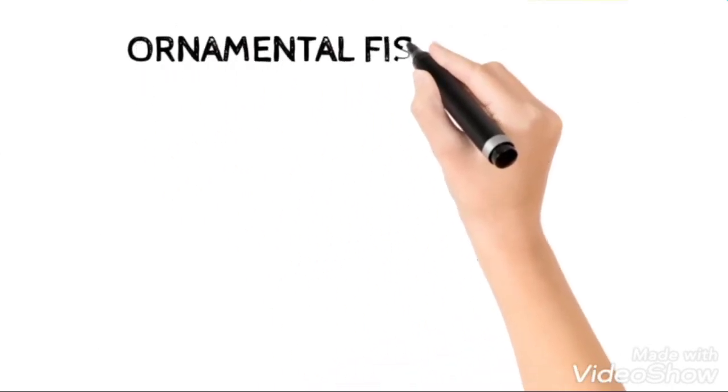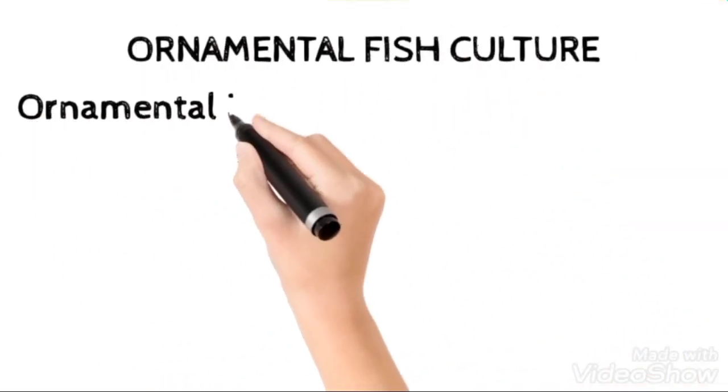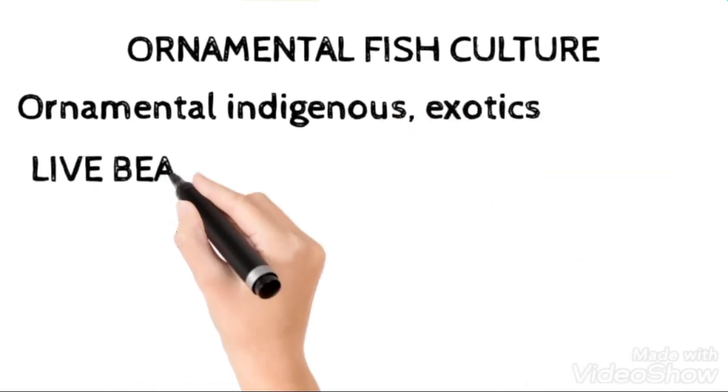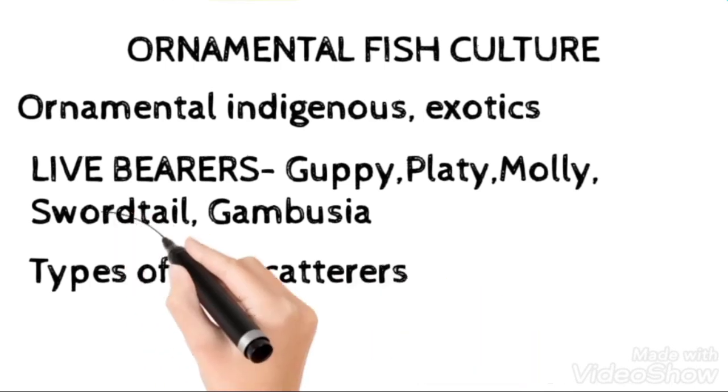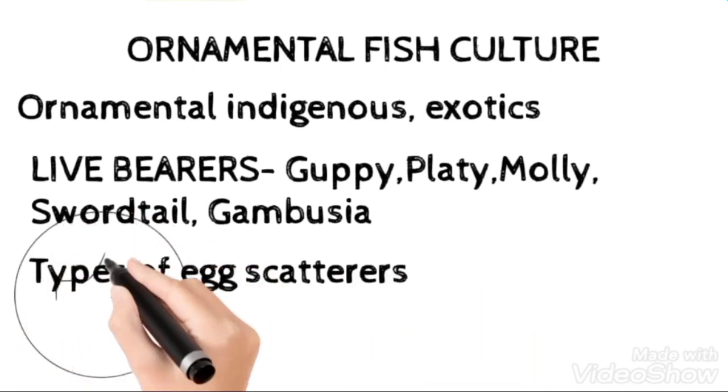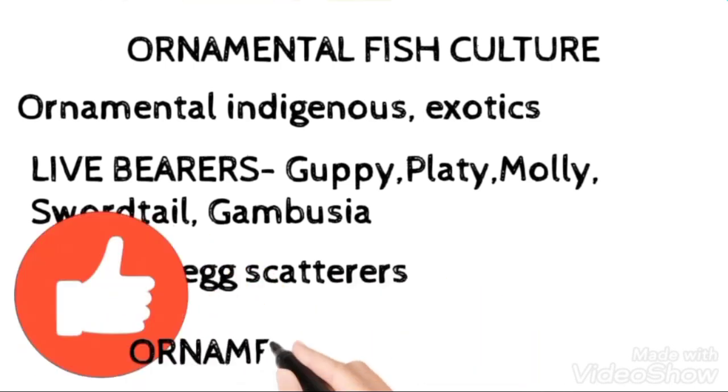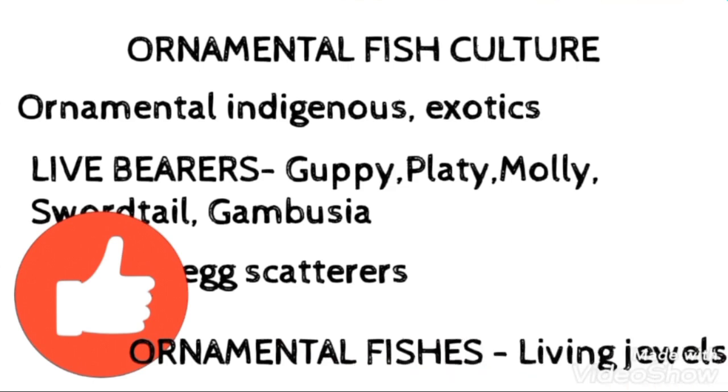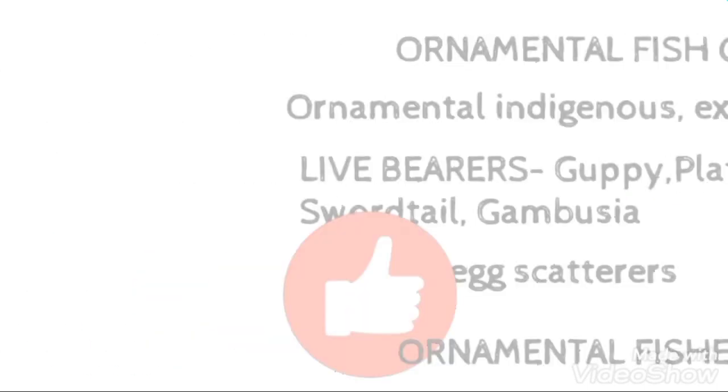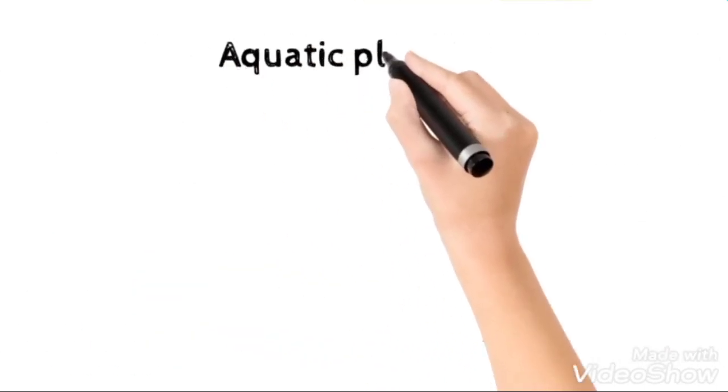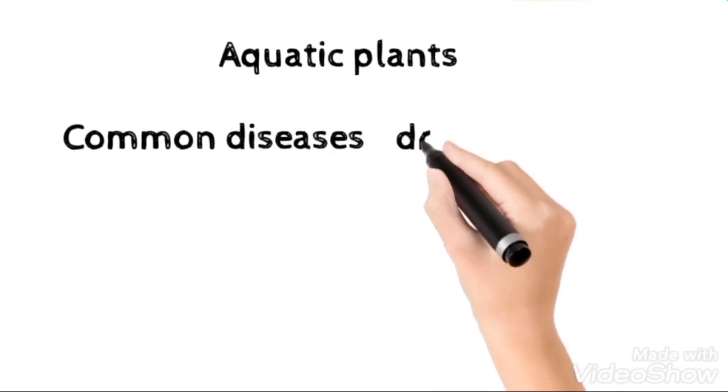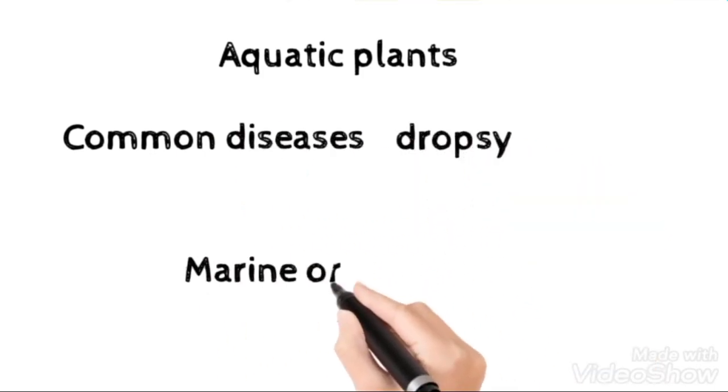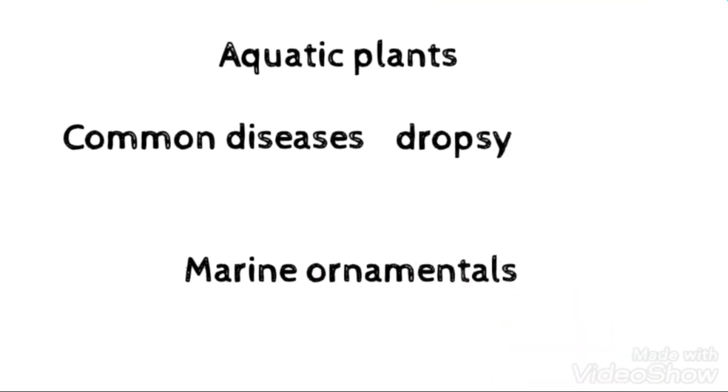Coming to the Ornamental Fish Culture, live bearers and the egg layers should be very much clear, in which the types of egg scatterers should be clearly studied with the examples. Here is the important question: the living jewels is, of course, ultimately the ornamental fishes. Then we need to be clear with the aquatic plants names and floating, emergent, and then common diseases like dropsy. Also, you need to have a look on marine ornamentals.